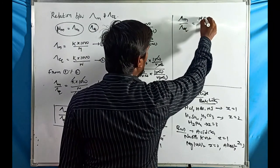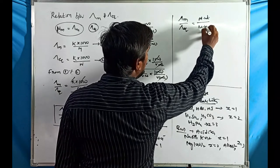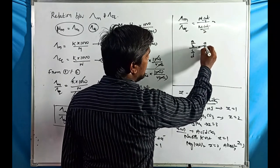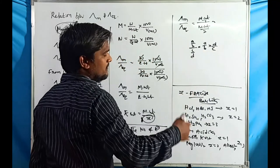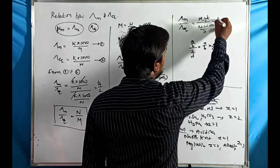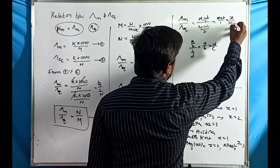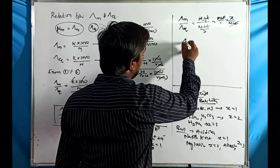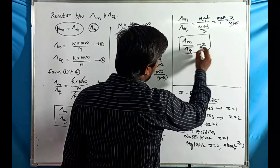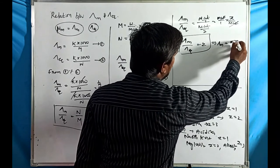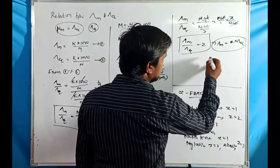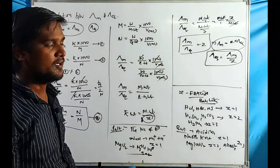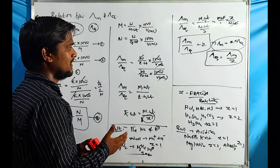Substituting into the equation, lambda m / lambda equivalent = molecular weight divided by (molecular weight / z). Molecular weight cancels, giving lambda m / lambda equivalent = z. Therefore, molar conductance = z × equivalent conductance, or equivalently, equivalent conductance = lambda m / z.